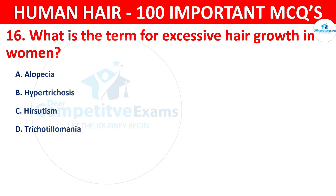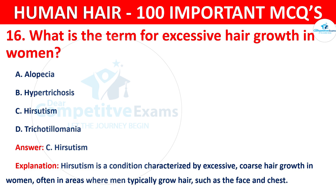The correct answer is C — hirsutism. Hirsutism is a condition characterized by excessive hair growth in women, often in areas where men typically grow hair, such as the face and chest.